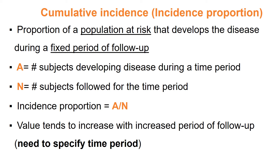Incidence can be measured as a proportion, known as incidence proportion or cumulative incidence. We measure the proportion of a population at risk that develops the disease during a time period. If A is the number of subjects developing disease during a time period and N is the number of subjects followed for the time period, then the incidence proportion — or cumulative incidence or risk — is A over N. This value tends to increase with increased period of follow-up, which is why we need to specify the time period.